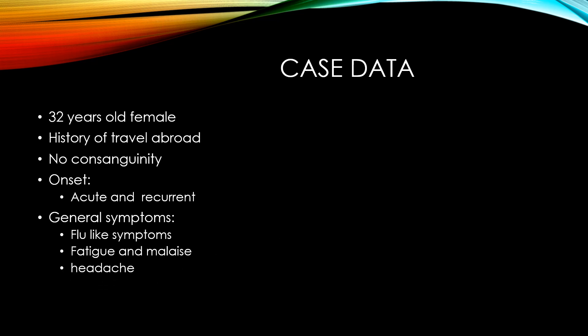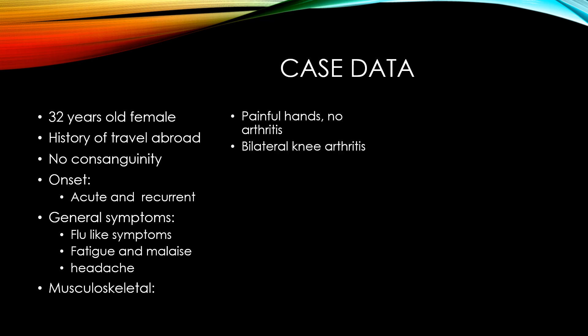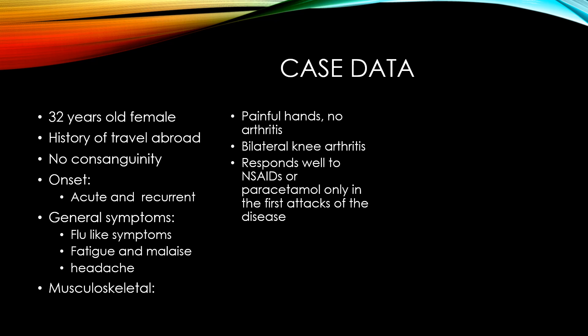With headache. Musculoskeletal examination: painful hands with no arthritis — so there is polyarthralgia of the hands with no definite arthritis — with bilateral knee arthritis. So the knees have arthritis, but the hands have no true arthritis. This painful hand responded to anti-inflammatory drugs or paracetamol only in the earliest attacks of the disease.